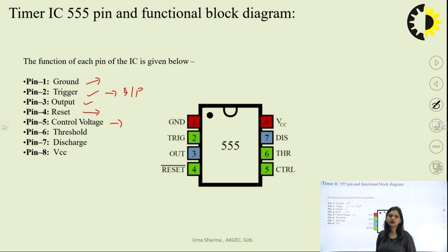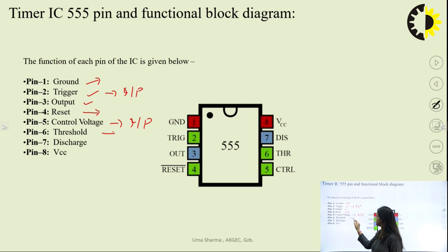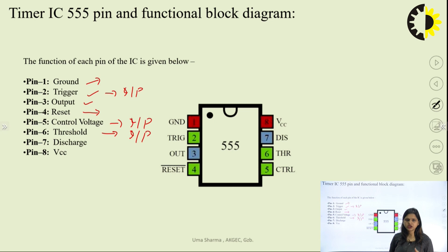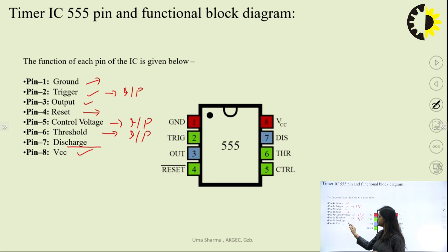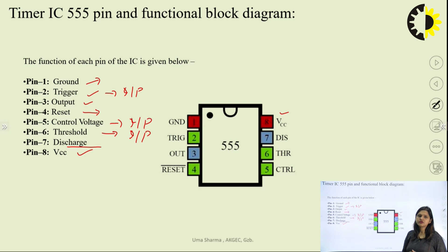Pin number 5 is the control voltage pin — an input pin by which we can control the operation of the IC. Pin number 6 is the threshold voltage — also an input — where we can apply voltage to change the operation or vary the frequency or time period of the output waveform. Pin number 7 is the discharge pin, used to discharge capacitors connected at the output node. Pin number 8 provides the supply voltage to the IC. The supply can vary from plus 5 volts to plus 18 volts.